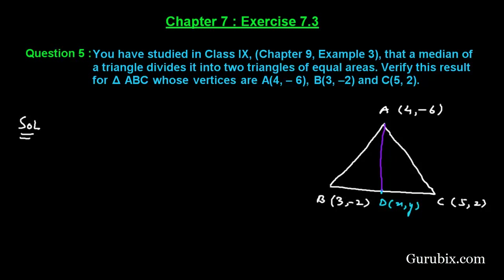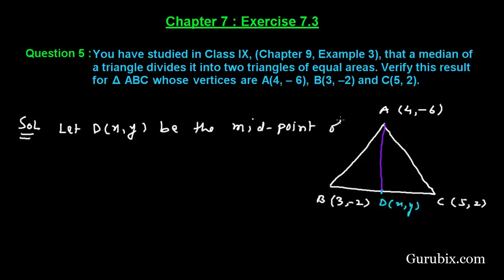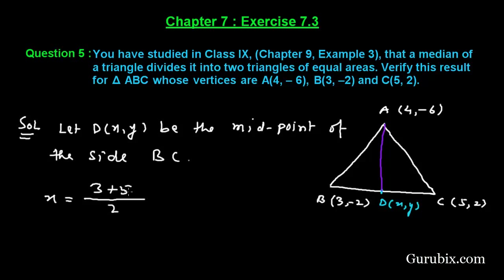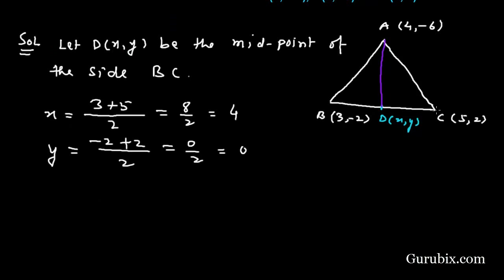First, we shall find the coordinates of point D. Let D(x, y) be the midpoint of side BC. The x-coordinate of D is (3 + 5) / 2 = 8 / 2 = 4. The y-coordinate of D is (-2 + 2) / 2 = 0 / 2 = 0. Therefore, the coordinates of D are (4, 0).